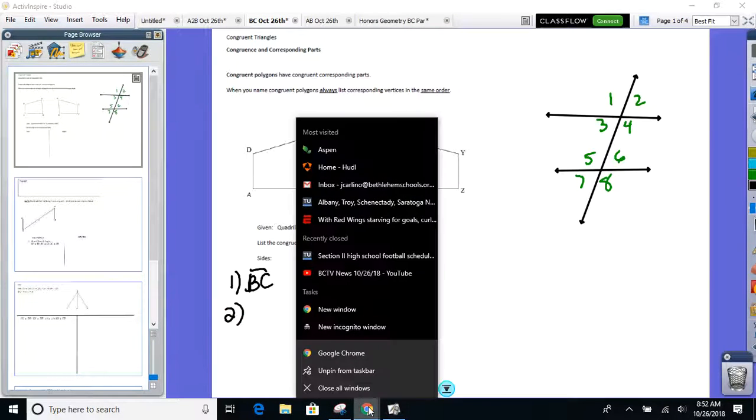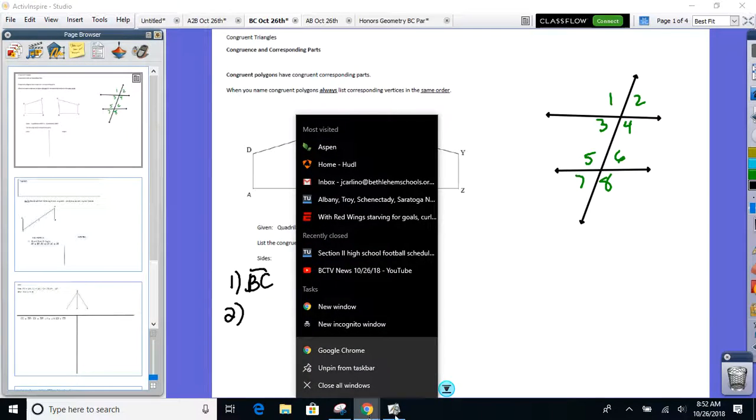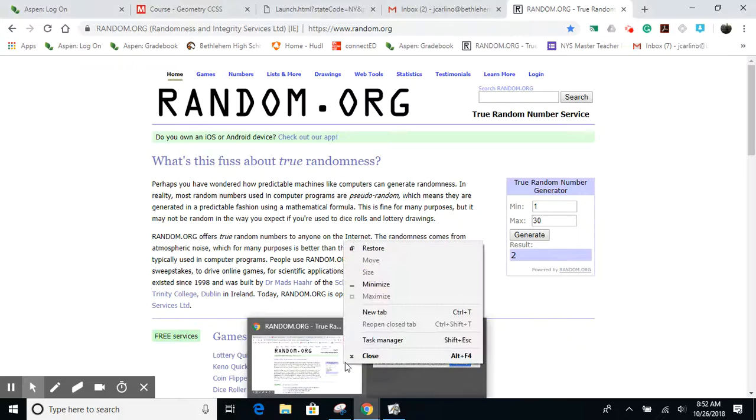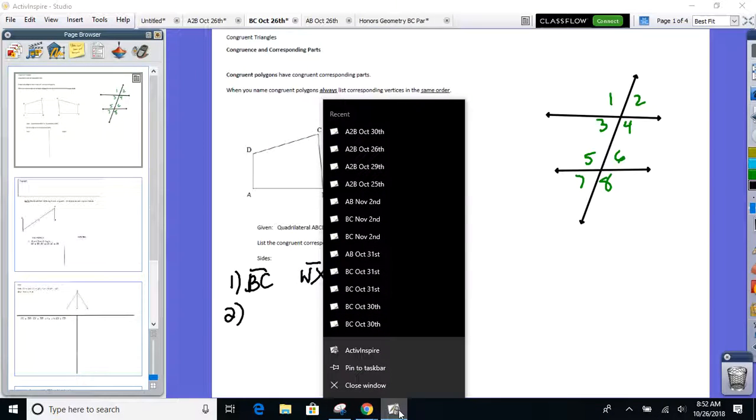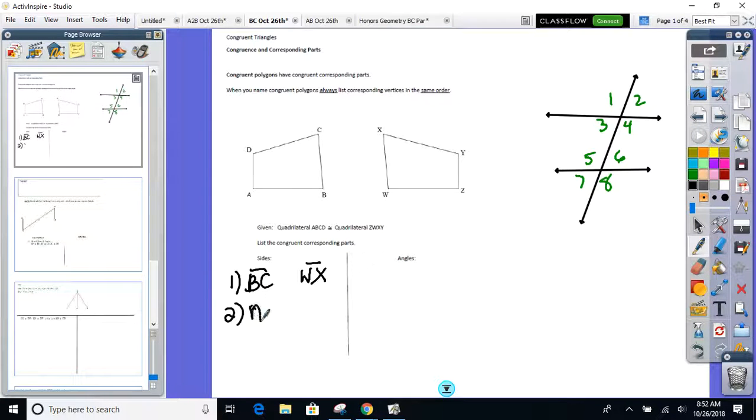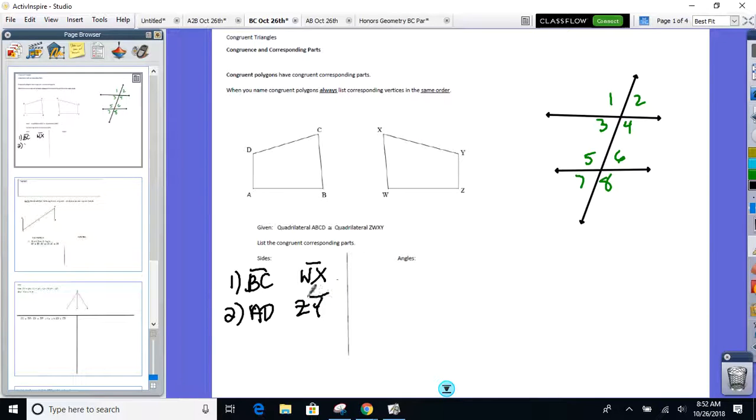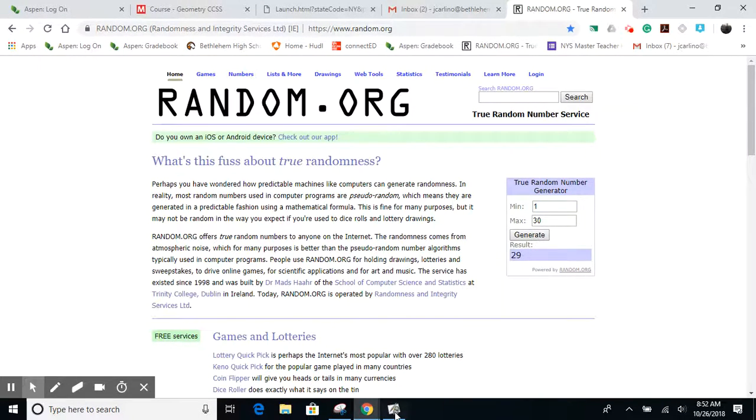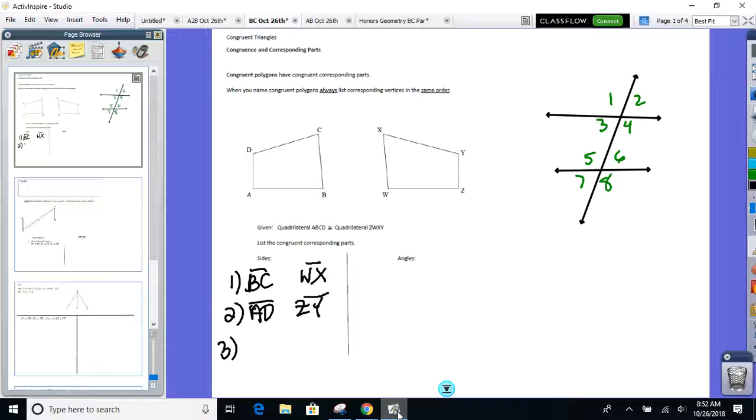And I'm putting gaps in between for a reason. BC and WX. Give me another pair of sides that match up, because there should be four pair here. Another pair that match up. AD matches up with ZY. And another pair for me. CDXY. And then by process of elimination, the fourth pair should be AB and WZ.